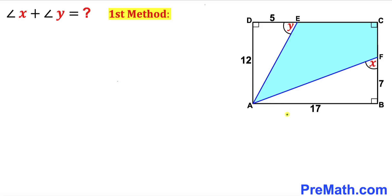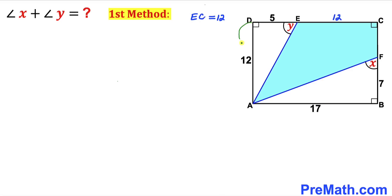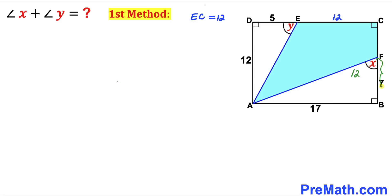Let's focus on rectangle ABCD. Side length AB is 17 units, and since we are dealing with a rectangle, side length CD is also 17 units. Since DE is 5 units, line segment EC is 17 minus 5 equals 12 units. Side length AD is 12 units, so BC is also 12 units, and since FB is 7 units, side length CF is 12 minus 7 equals 5 units.